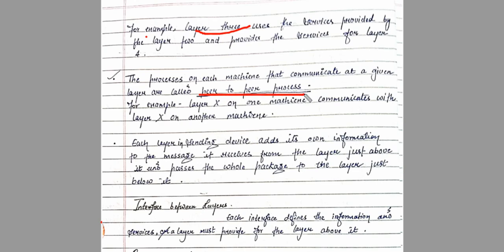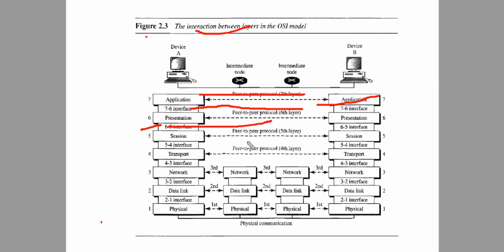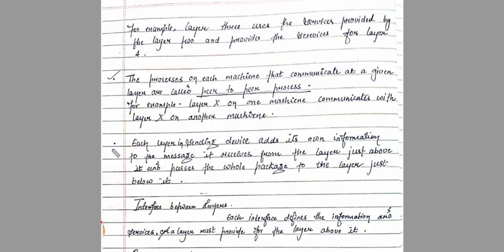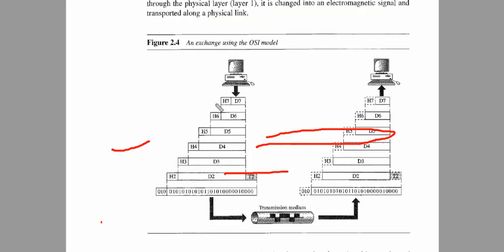To recap the peer-to-peer process: layer X on one machine communicates with layer X on another machine — for example, the network layer on the sender side communicates with the network layer on the receiver side. That is a peer-to-peer process. Additionally, each layer in the sending device adds its own information to the message it receives from the layer just above it, and passes the whole package to the layer just below it.